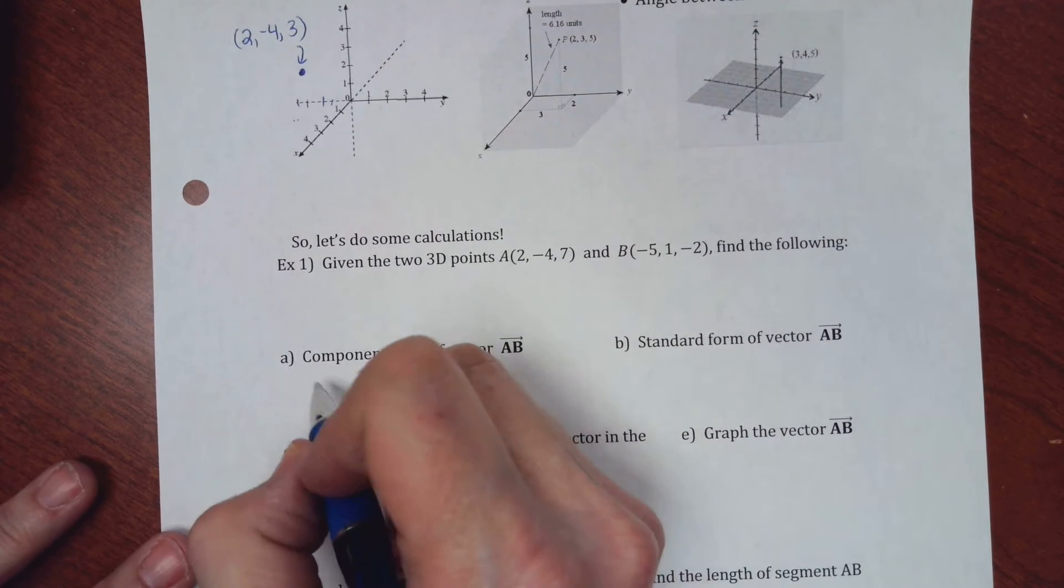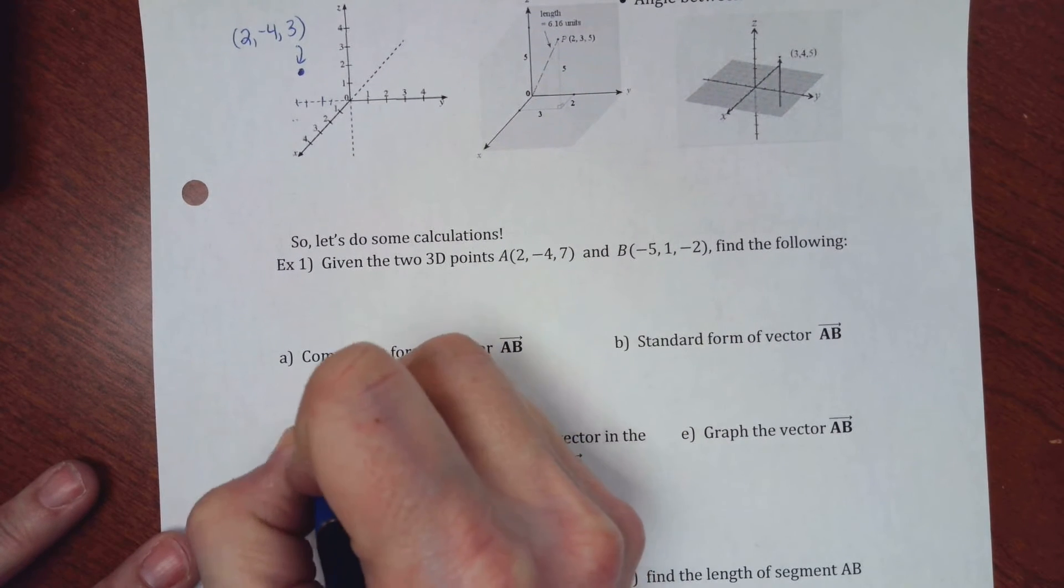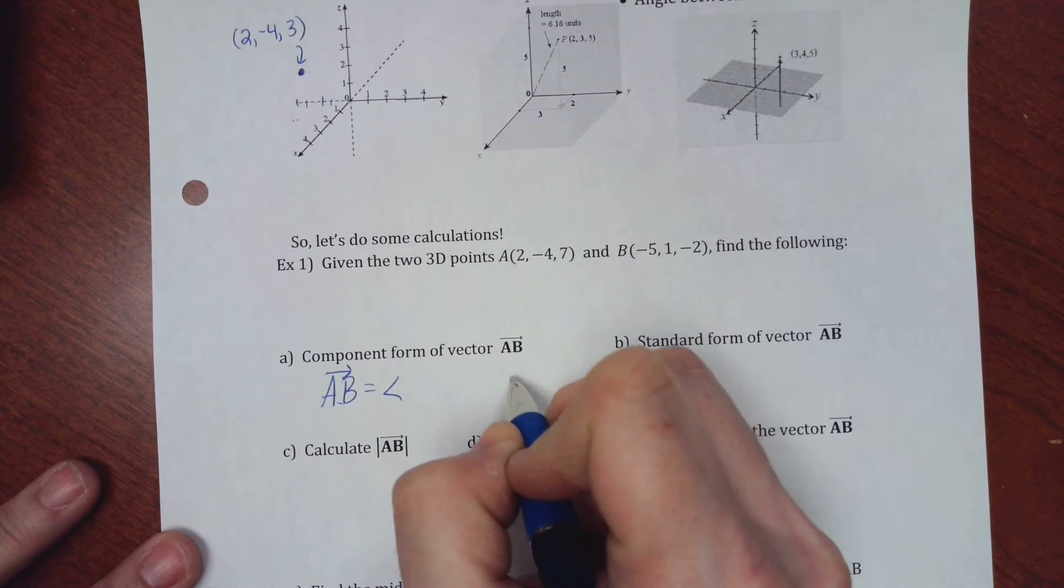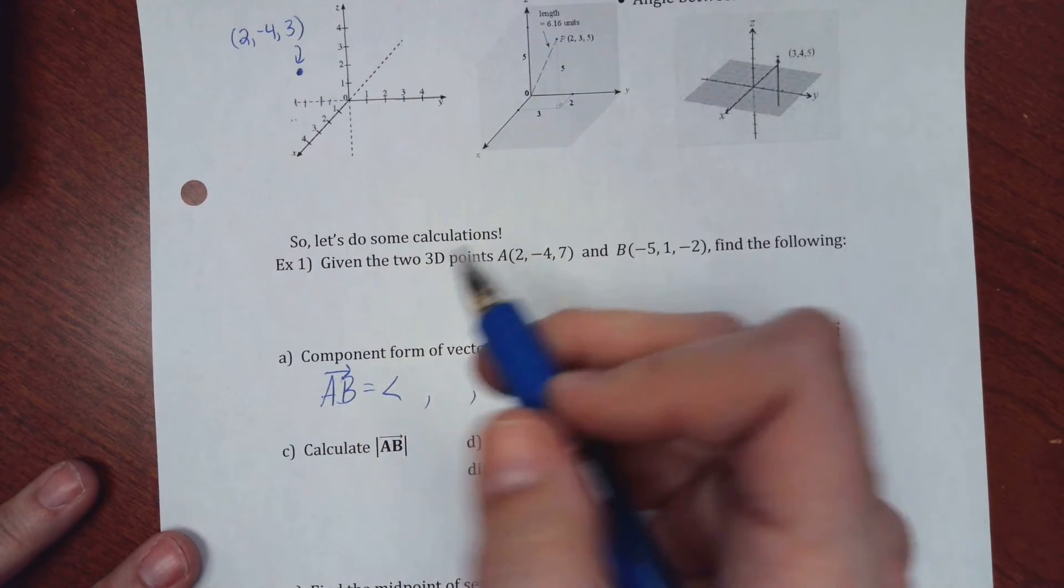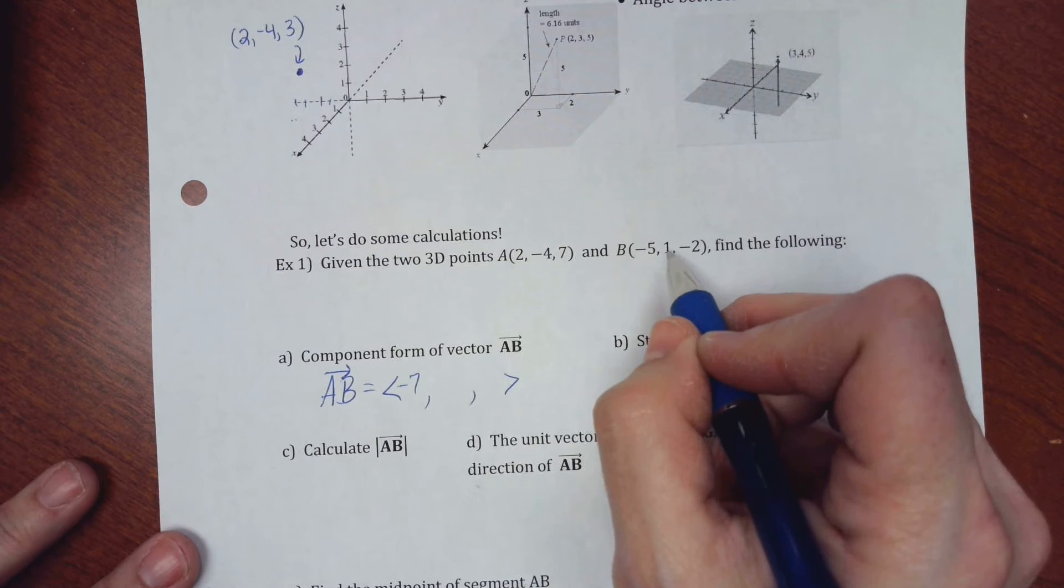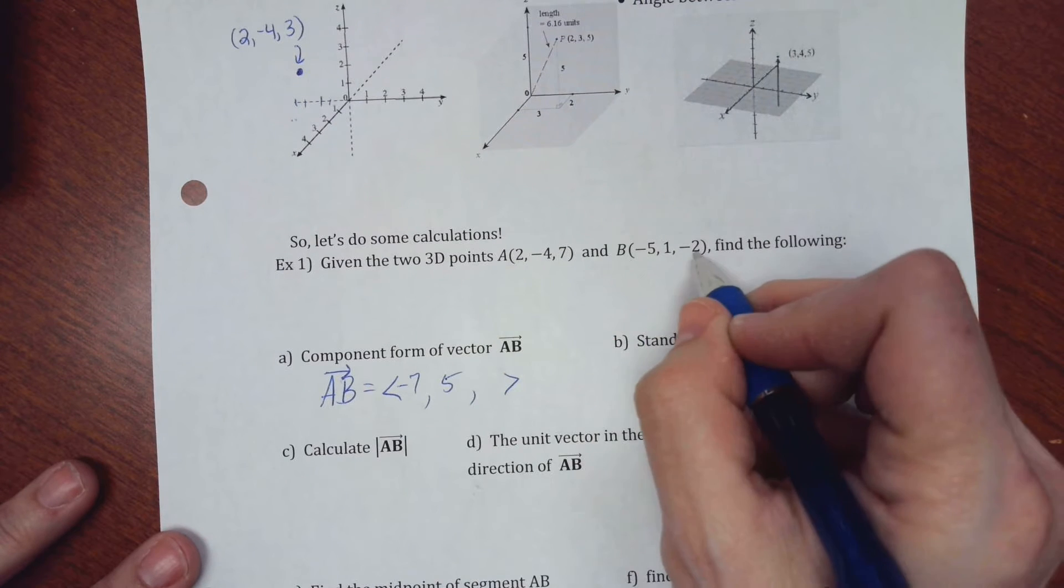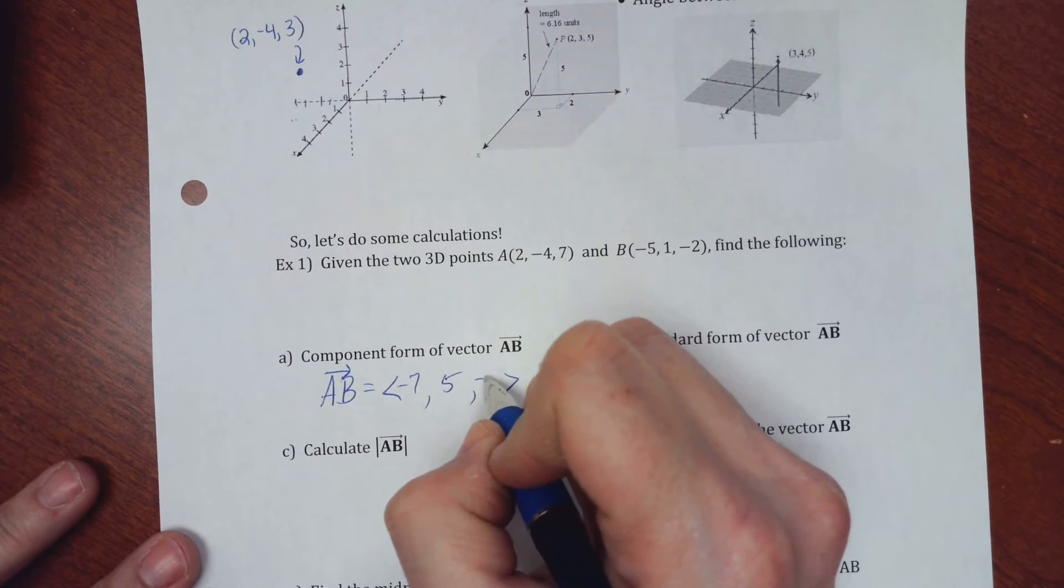Down below, it should be pretty quick. Alright, so given two 3D points right here, find the following. So I want the component form. So basically, I have AB. I subtract the x, the y, and the z. So negative 5 minus 2 is negative 7. 1 minus negative 4 is 5. And then negative 2 minus 7 is negative 9.